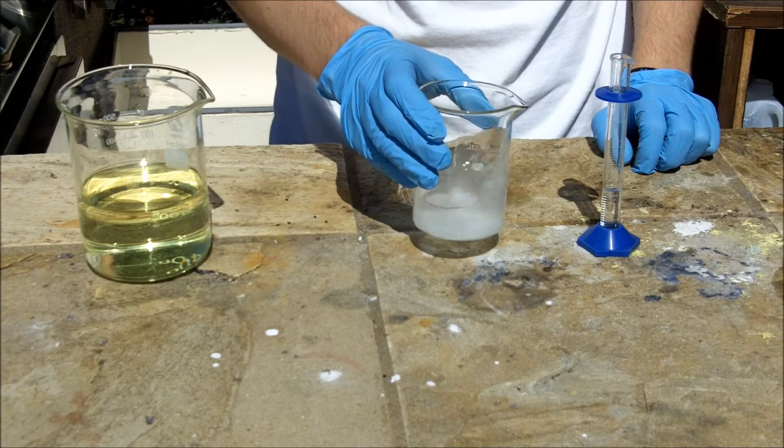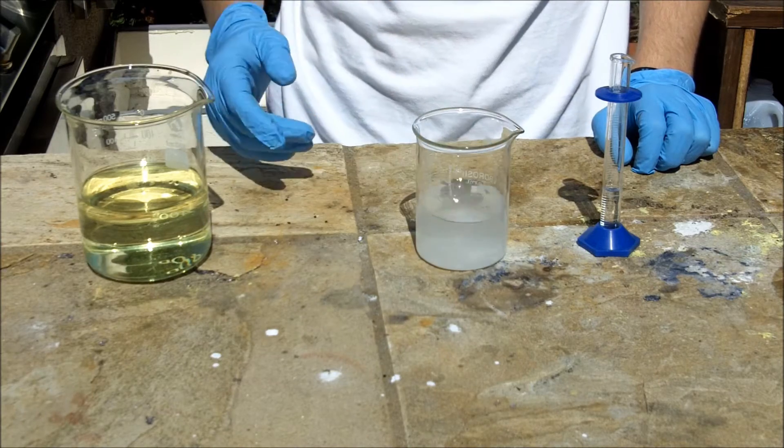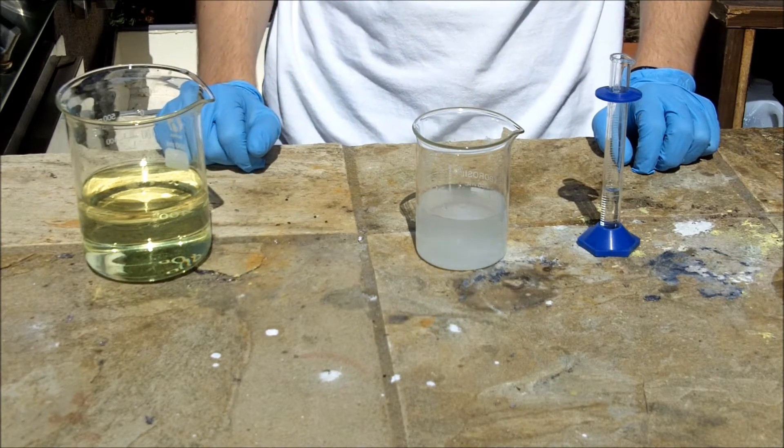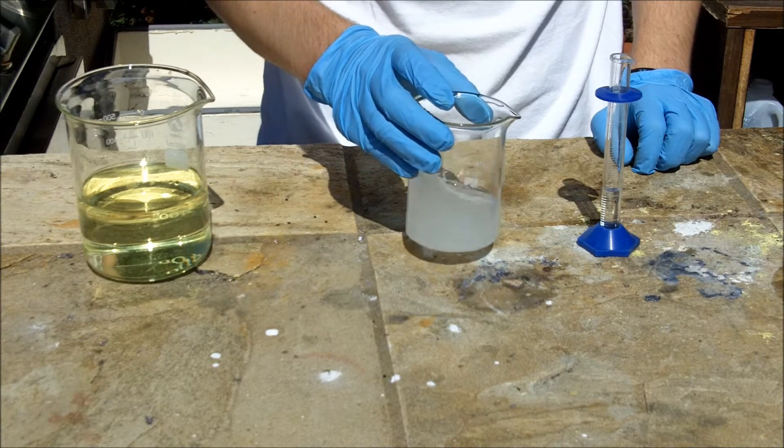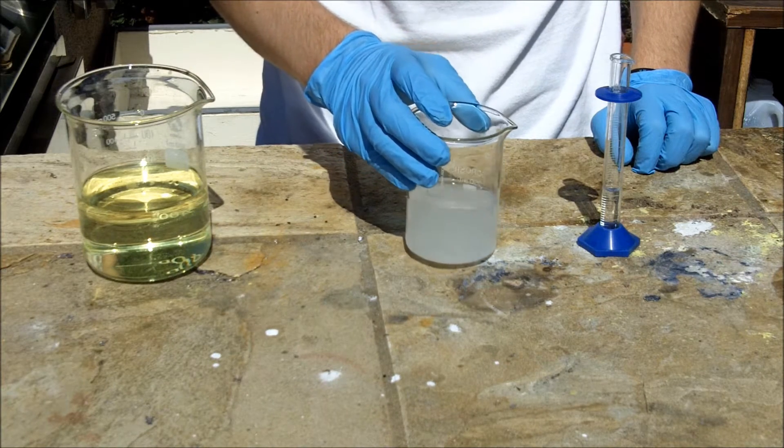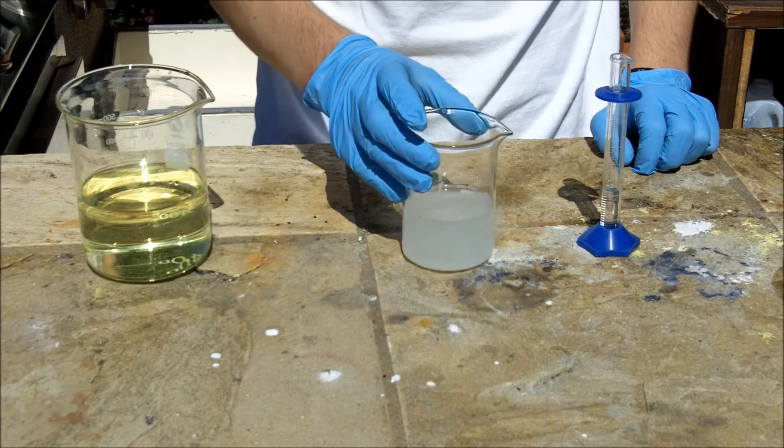I'll also be showing this method except using an iodide salt to make iodoform because I believe this is more forgiving of stoichiometry errors so it should be easier to get a higher yield than the method I showed in my iodoform video.